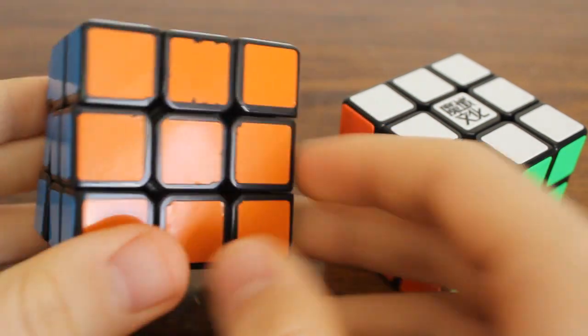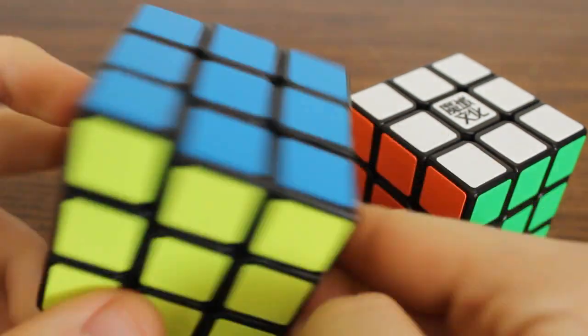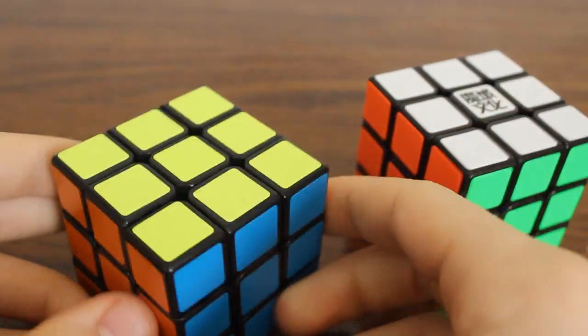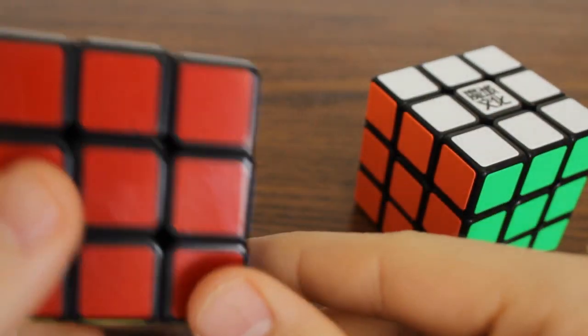I have here a WeiLong version 1, and just this orange side is peeling a little bit. And still all the shades. This has over a thousand solves on it, probably. And the stickers hold up forever, pretty much.